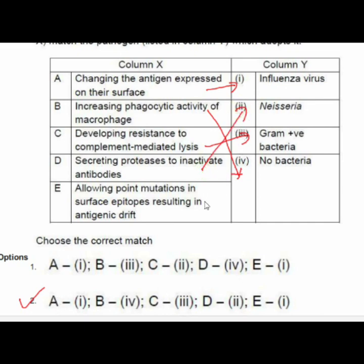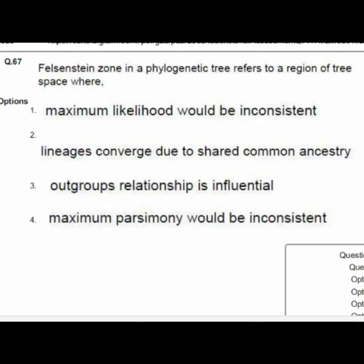Question 67: The Felsenstein zone in a phylogenetic tree refers to the region of tree space where maximum parsimony will be inconsistent. Option 4 is the correct answer.